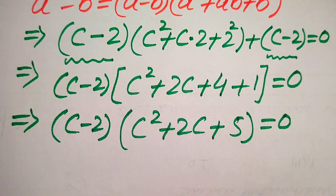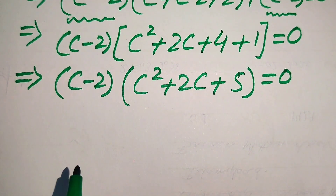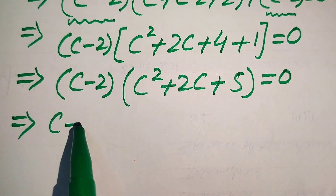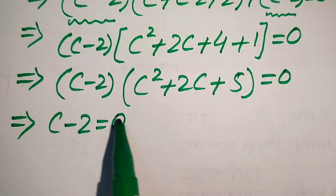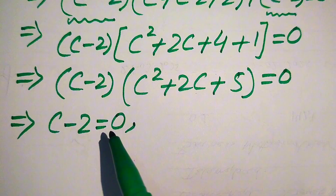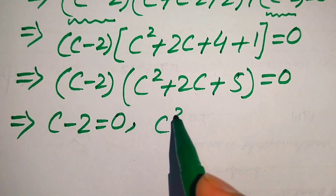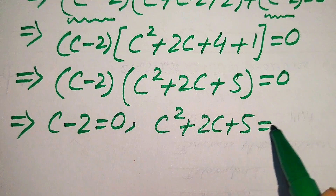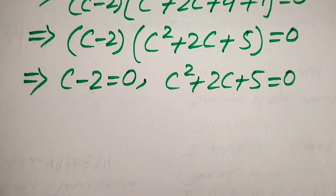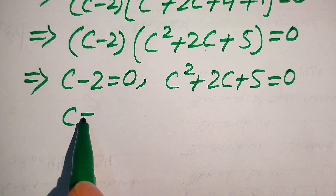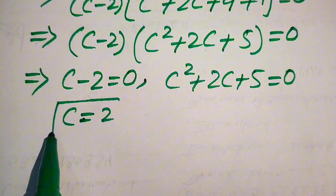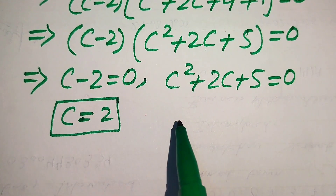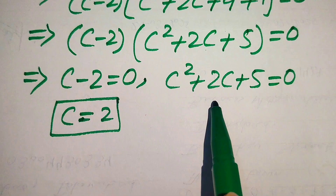We divide this into two cases. The first case is c minus 2 equals 0, giving c equals 2. The second case is c squared plus 2c plus 5 equals 0, which is a quadratic equation we need to solve.